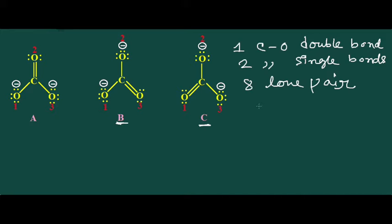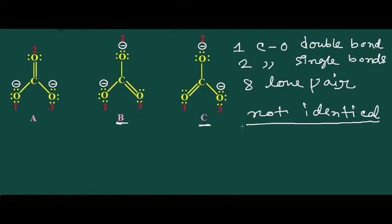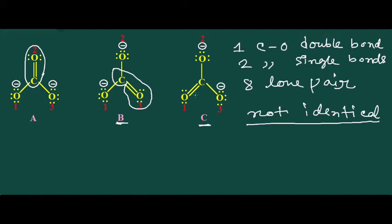But in reality, they are not identical. The position of the carbon-oxygen double bond makes them different. This has happened due to the delocalization of electrons — that means lone pairs and electron pairs in the pi bonds have been moved around. In case of A, the carbon-oxygen double bond is between carbon and oxygen 2. In case of B, it is between carbon and oxygen 3. So you can see that the structures are not identical, but they are all valid Lewis structures.